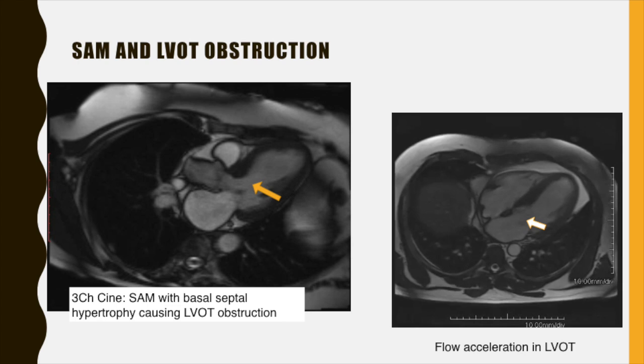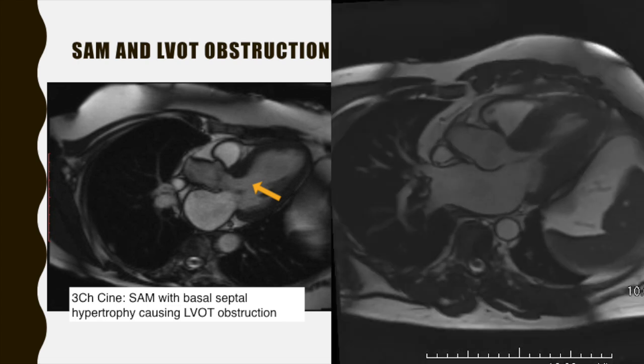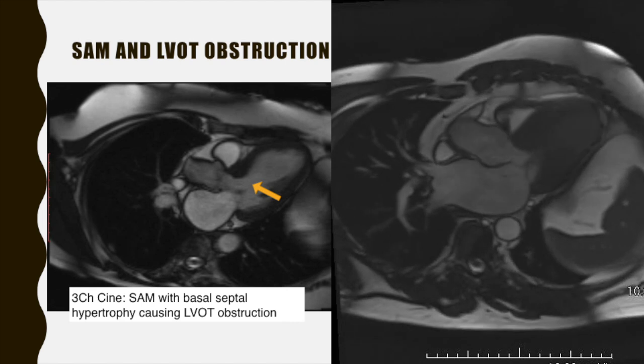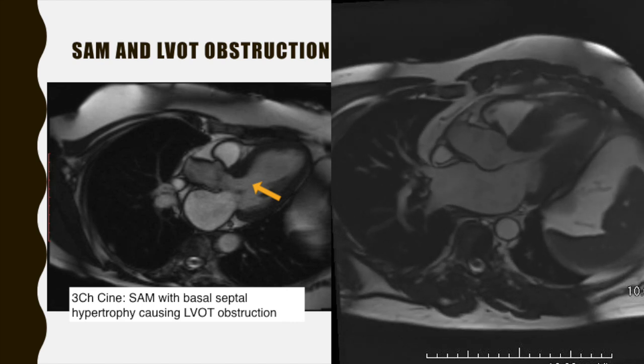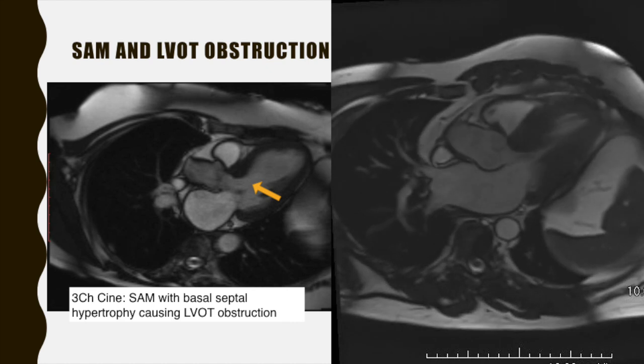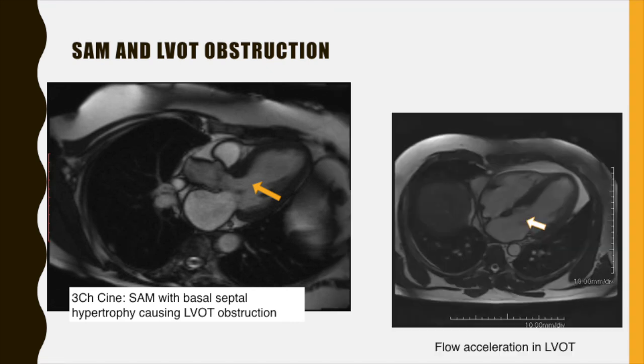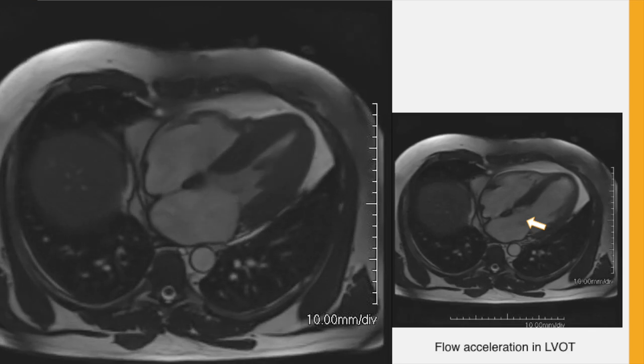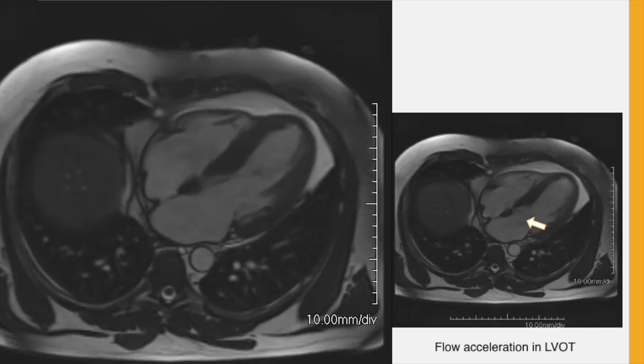Here is the cine loop of systolic anterior motion of the mitral leaflet along with basal septal hypertrophy causing dynamic LVOT obstruction in a patient with HCM. Sometimes overt systolic anterior motion of the mitral leaflet may not be established, but a bright signal of flow acceleration may be noted in the LVOT on CMR. As in this patient's four-chamber view on the right, this can point to HCM.